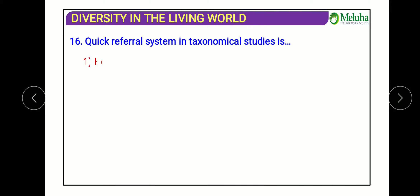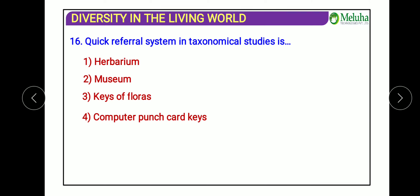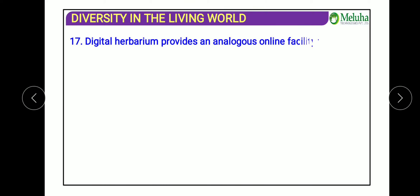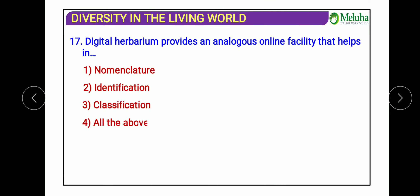The next question: which is the quick referral system in taxonomical studies? The answer is herbarium. A herbarium contains dried, pressed, and preserved plant parts stored systematically according to accepted rules. Digital herbarium provides an online facility that helps in nomenclature, identification, and classification. The herbarium is primarily used for quick referral and identification.